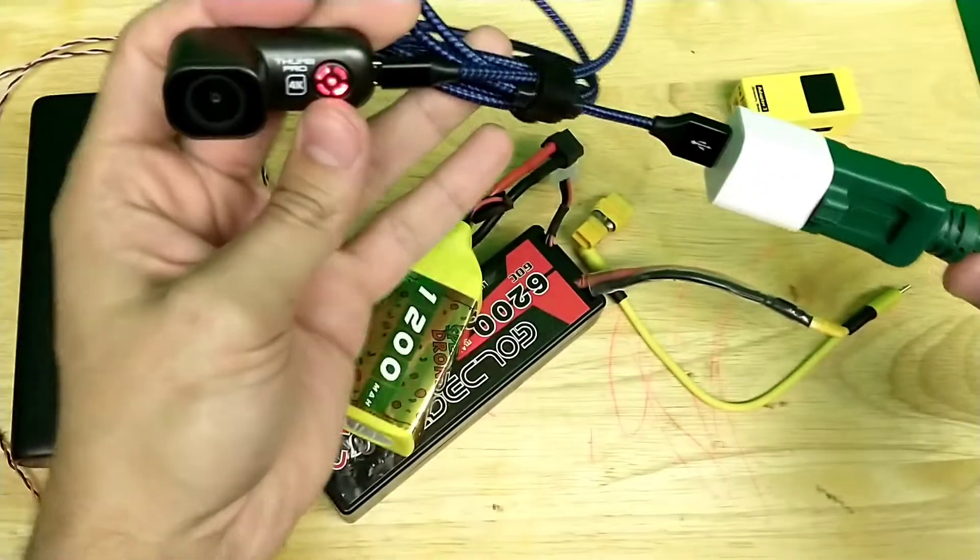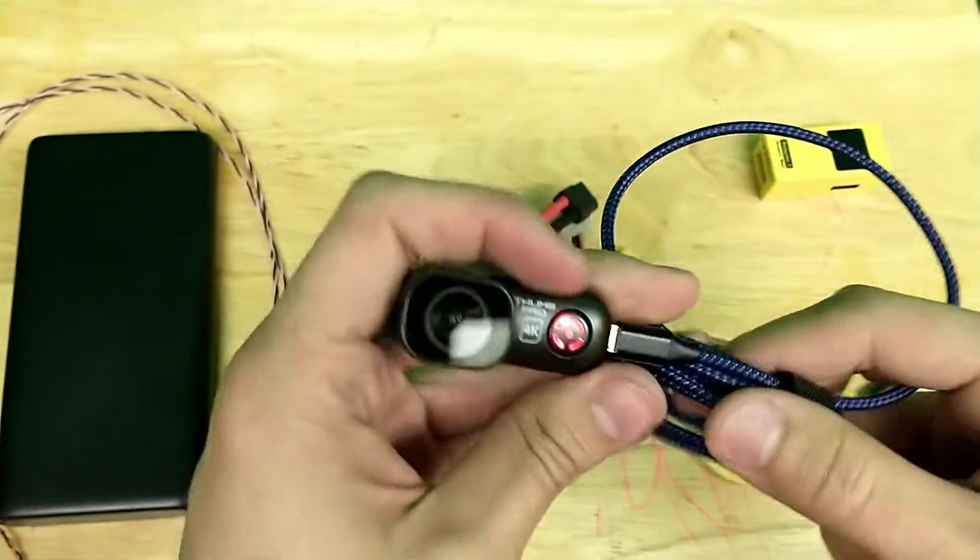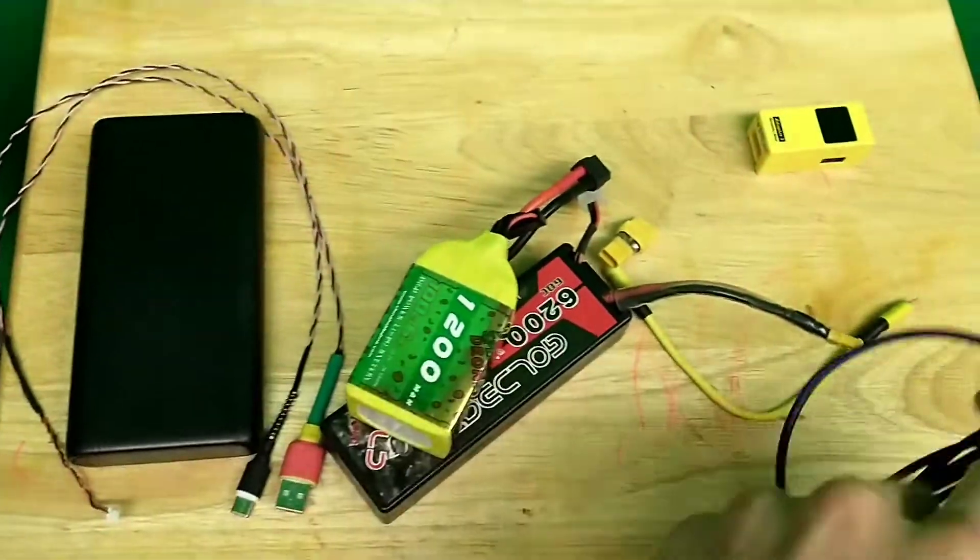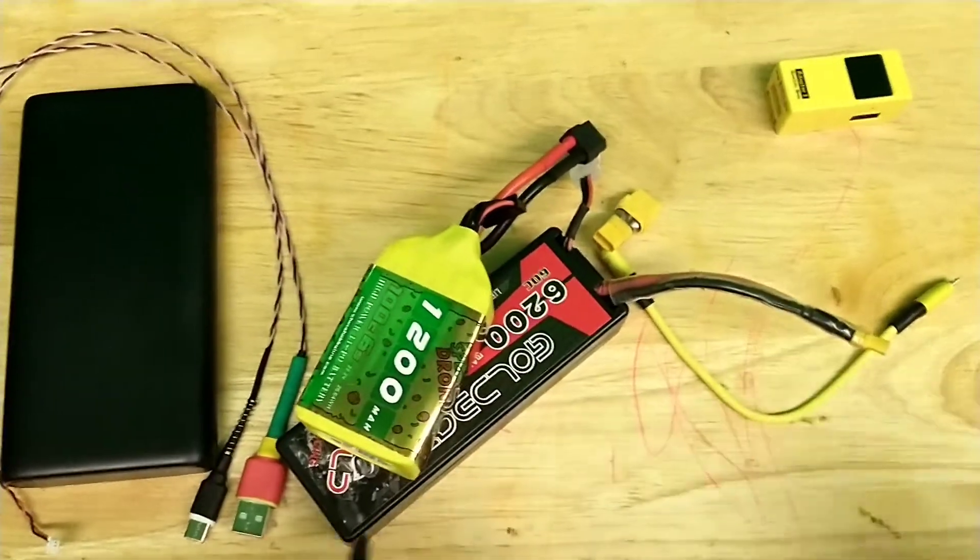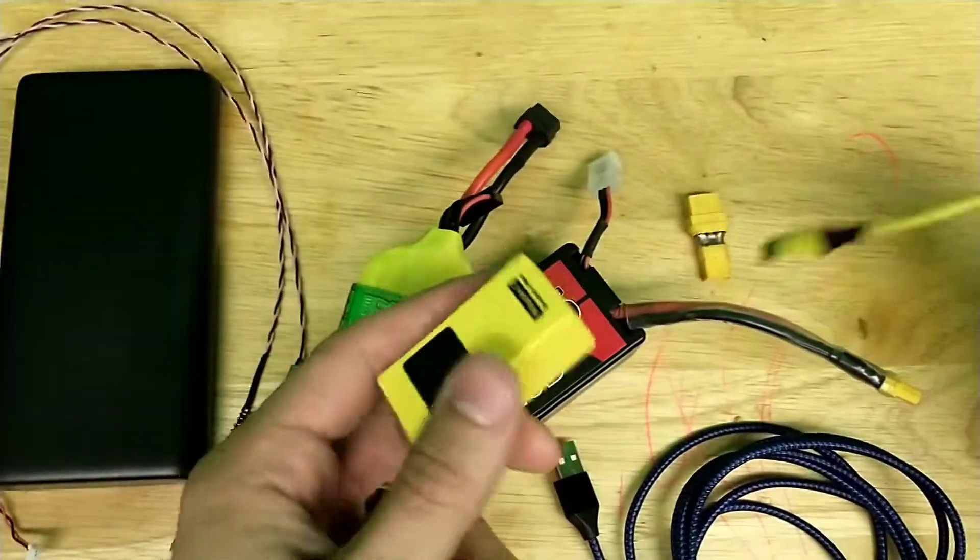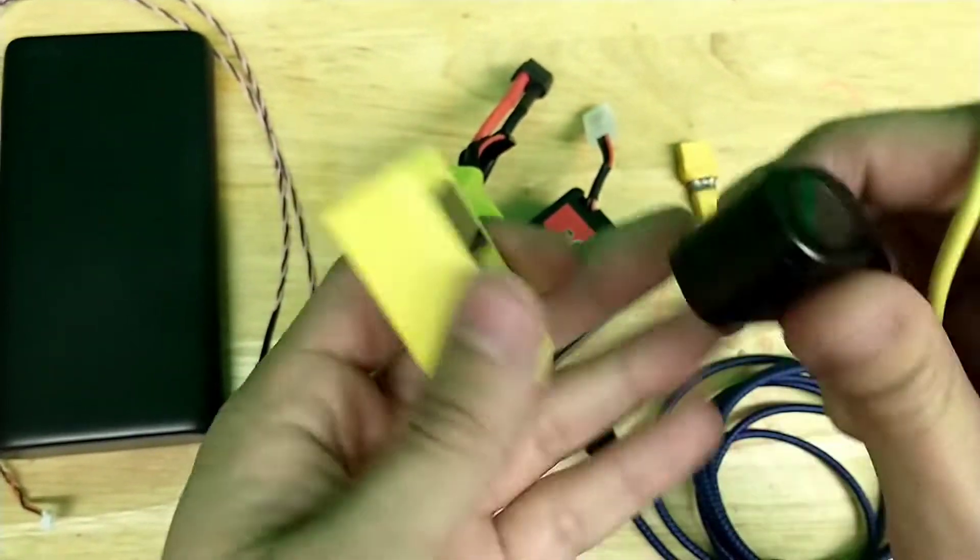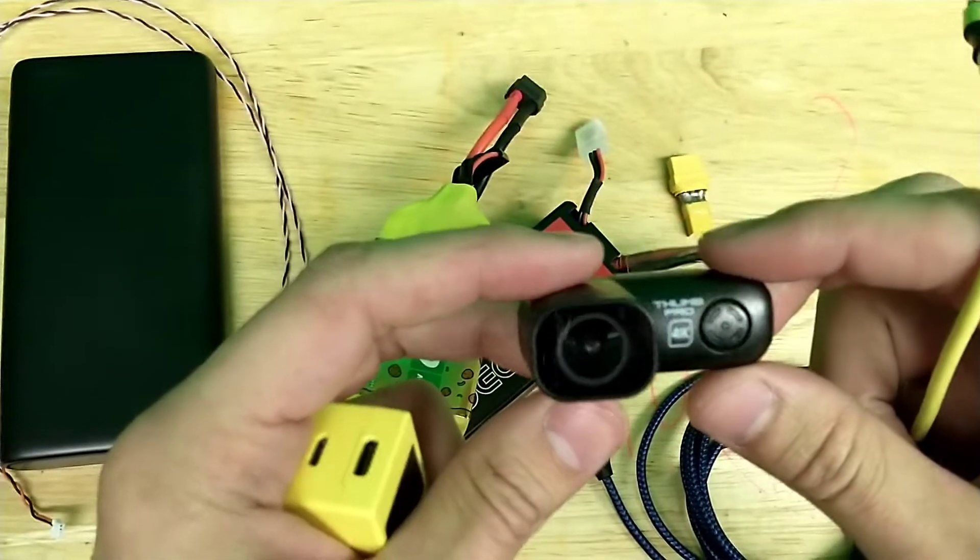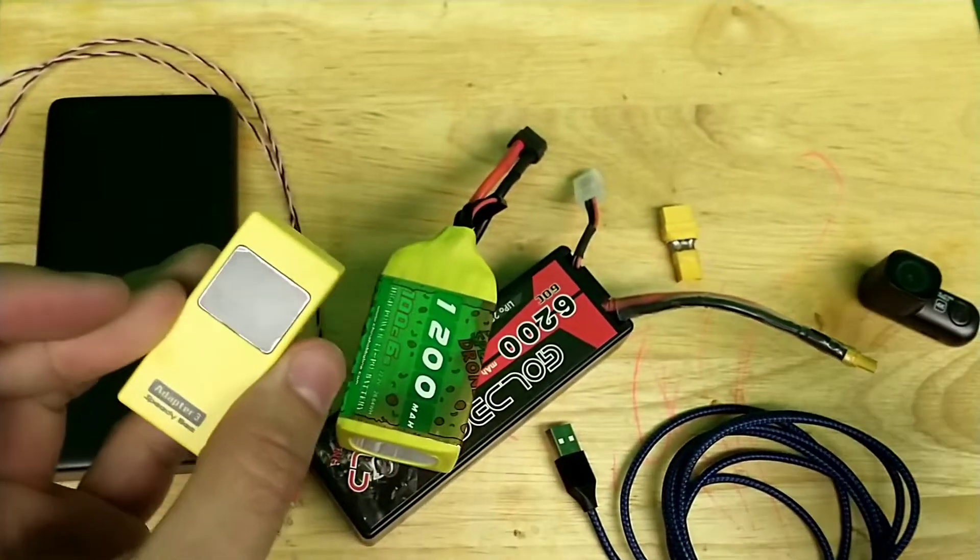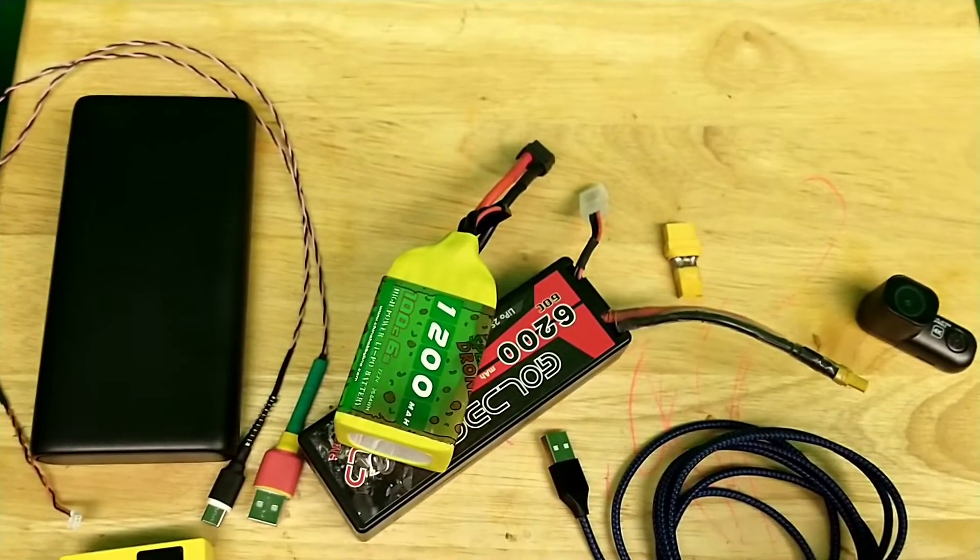So that's all the different ways I've found to power the thumb, the thumb pro. Most useful things is this SpeedyB adapter, because it lets you power it off of all your different batteries, and then it also gives you, gets you an OTG cable, so you can plug it into your phone, which is super helpful. Thanks for watching, have a great day.